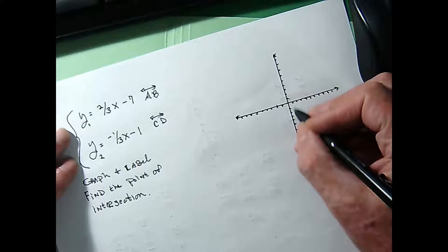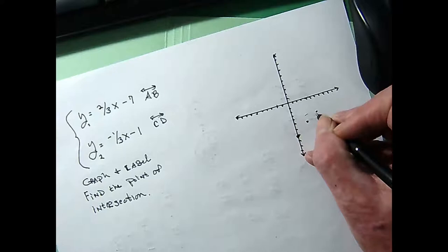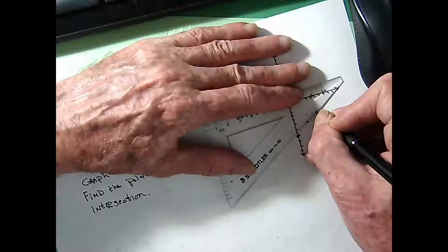Let's give it a look real quick. Y-intercept of negative 7. I'm going to go down there to about negative 7, right about there. Follow that slope up 2 and over 3. I'm just going to get pretty close. 2 and over 3, something about like that. I'm going to show that line, that's line AB right there.